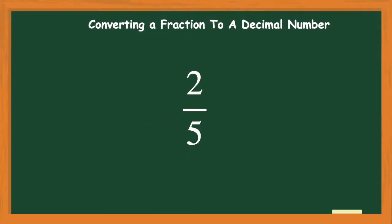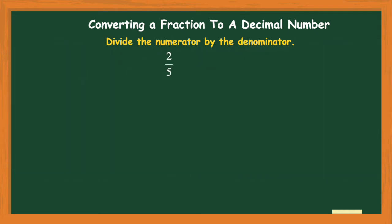Today we're going to be talking about converting a fraction to a decimal number. When you look at a fraction such as two-fifths, the only thing you need to remember is to divide the numerator by the denominator. The bar that separates the numerator of two and the denominator of five is called a fraction bar, and that fraction bar is really a division sign. All fractions are division problems.